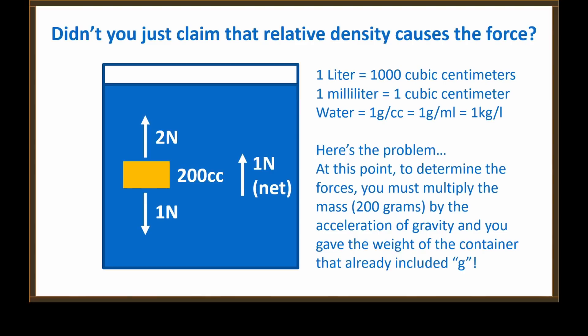Here's a problem. Spurs, didn't you just claim that relative density is what causes these forces? In order to get the buoyant force of two Newtons, you had to take the volume of water, 200 cubic centimeters, point two liters, and multiply by the acceleration of gravity, which you rounded to 10 meters per second per second. Point two times 10 is two Newtons. You got the answer correct, but you got it using the acceleration of gravity. And you stated the weight of the container in Newtons, which already included the acceleration of gravity. So now which way is it Spurs? Is it relative density that results in weight? Or is it, as we know, the mass of an object multiplied by the acceleration of gravity? And since you used that equation, I assume you must agree with that, correct?